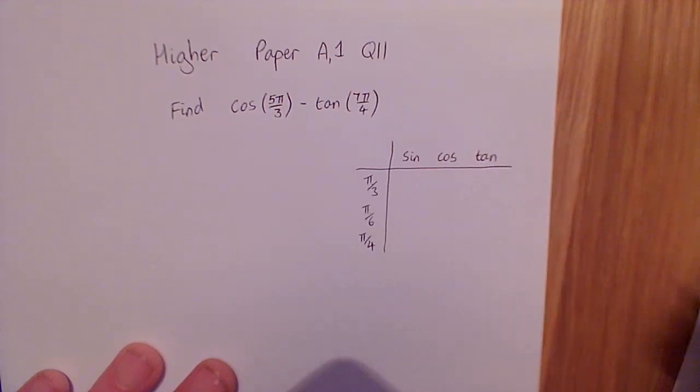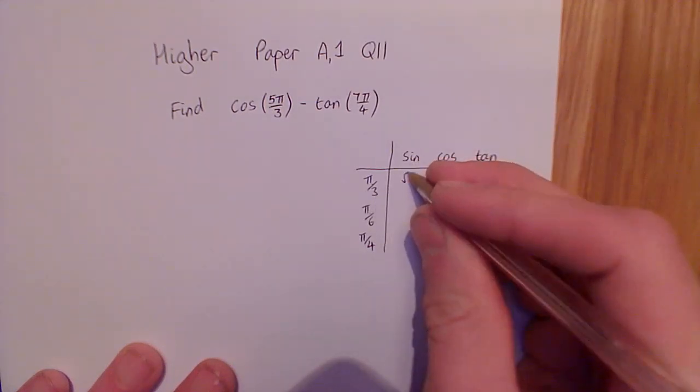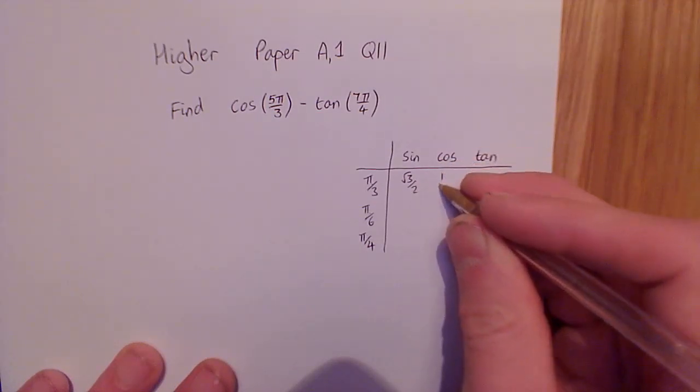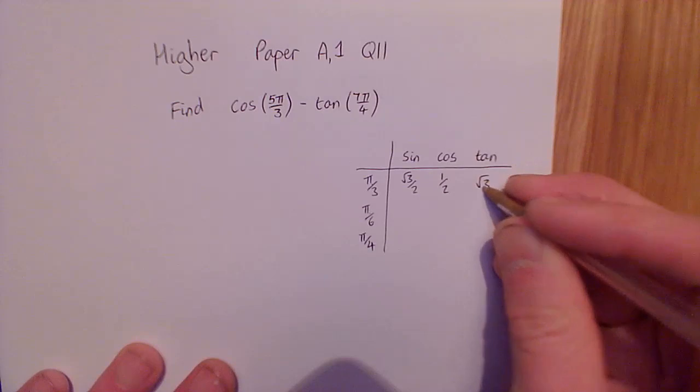For sine, cos, and tan: sine of π/3 is √3/2, cos of π/3 is a half, and tan of π/3 is √3.